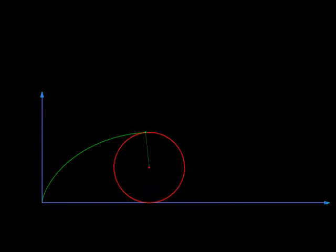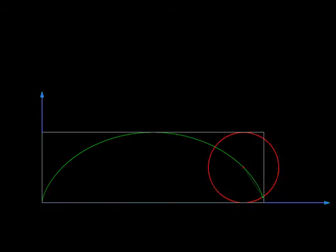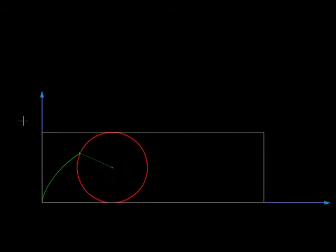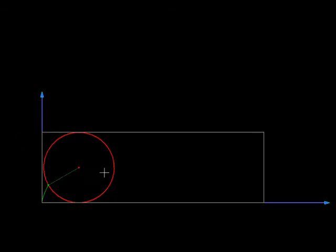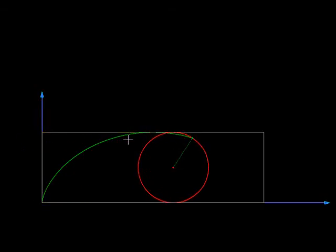Then we are going to enclose that cycloid in a rectangular box like this and we are going to talk about three areas: the area of this rectangle, area of this rolling circle, and area under the cycloid.